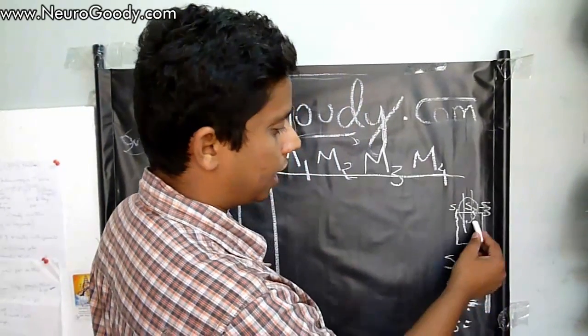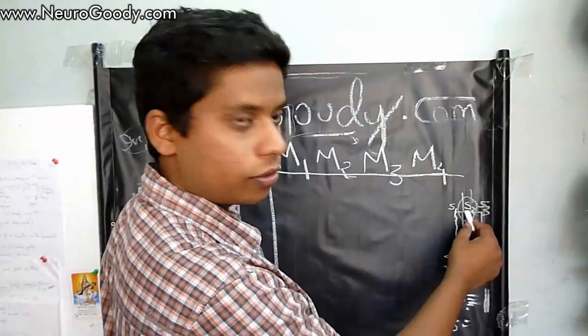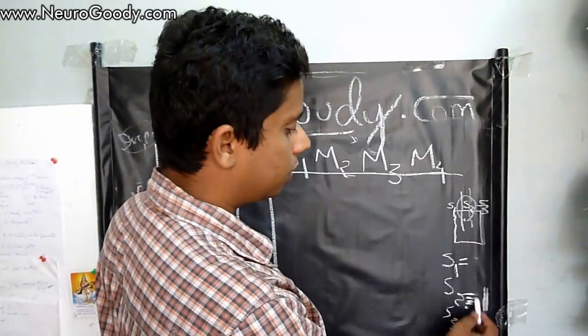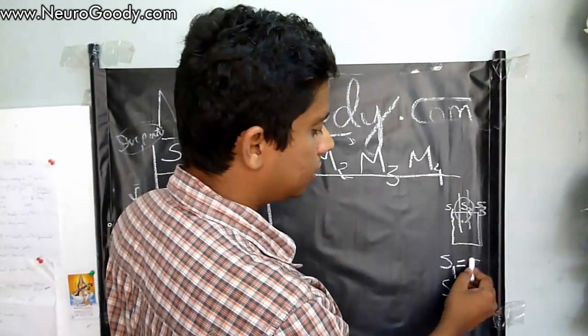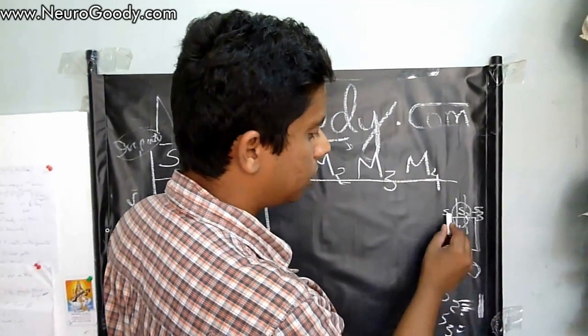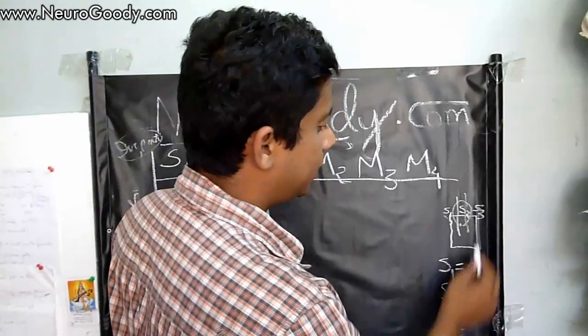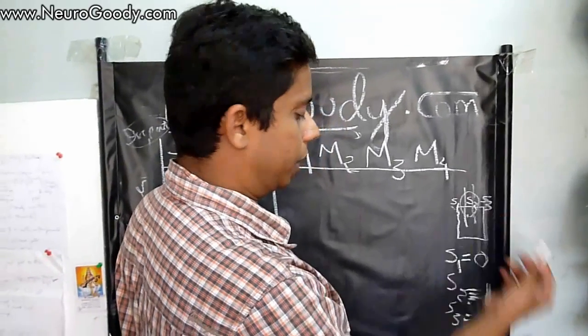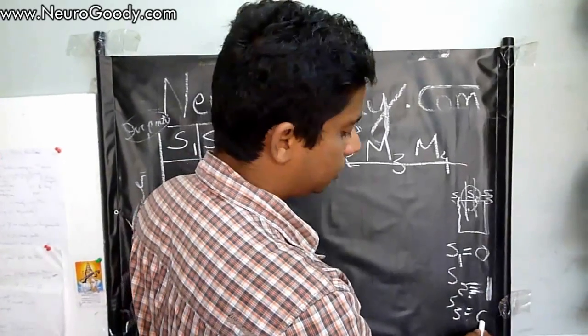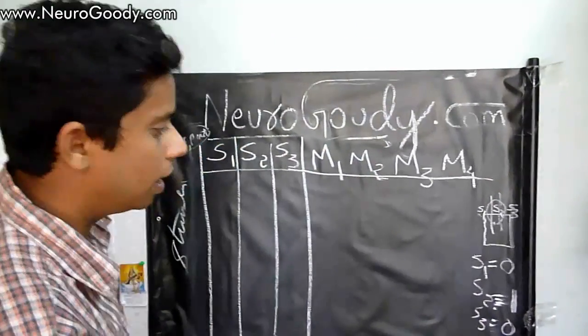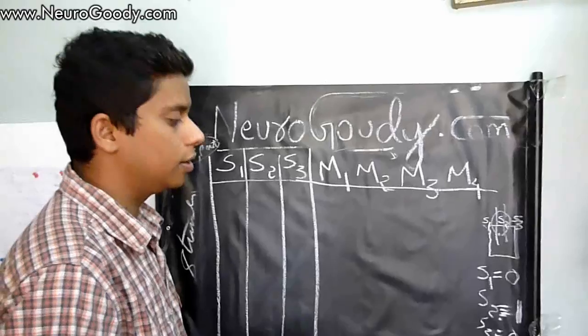S2 is on the line, so we have given it a value of 1. S1 is 0 because it is not on the line, and S3 is on the white part, so it is also 0. That is how we assign binary values to the sensor outputs.